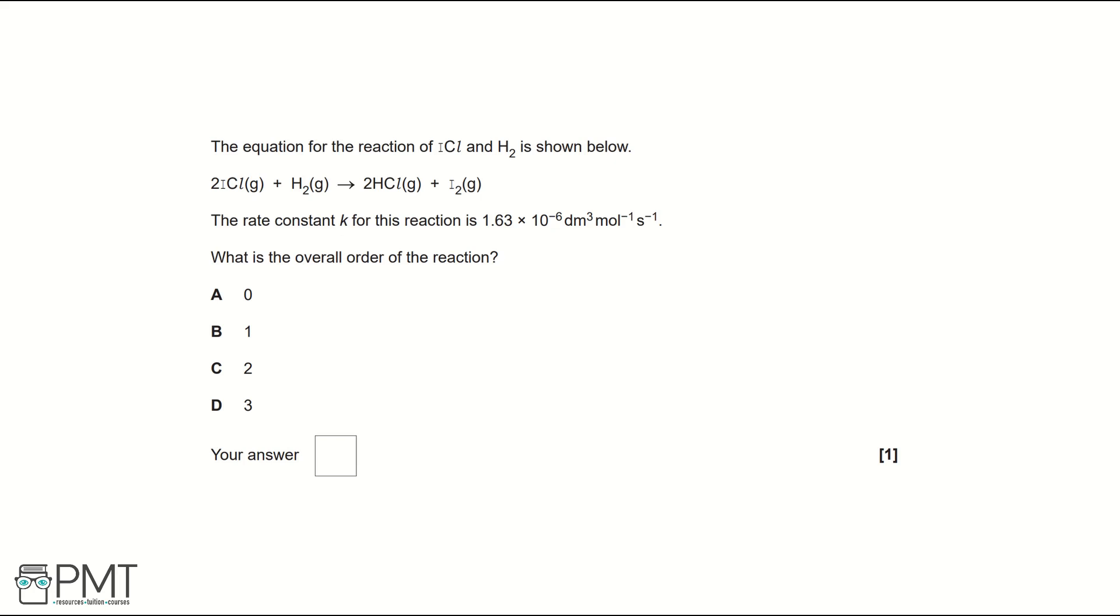If we start by writing a general rate equation, that's going to be rate equals K, which is the rate constant, multiplied by the concentration of one of our reactants and the concentration of another reactant. And then depending on the rate, so let's say we had a first order and a zeroth order, that's going to mean the overall order of reaction is first order, because 1 plus 0 is 1.